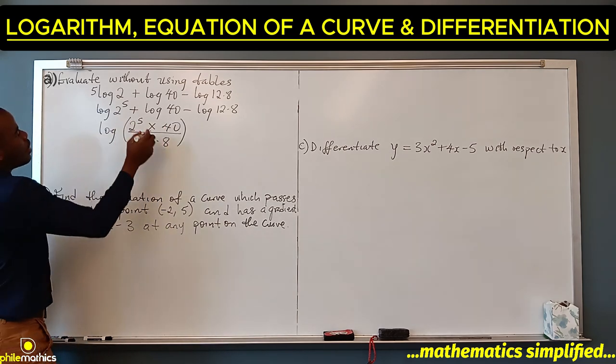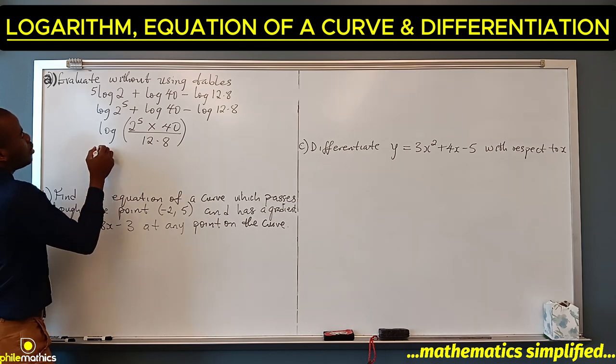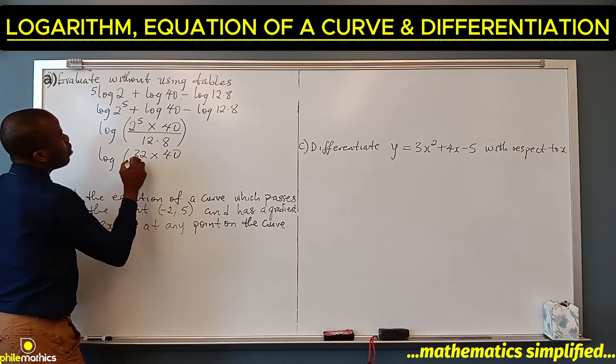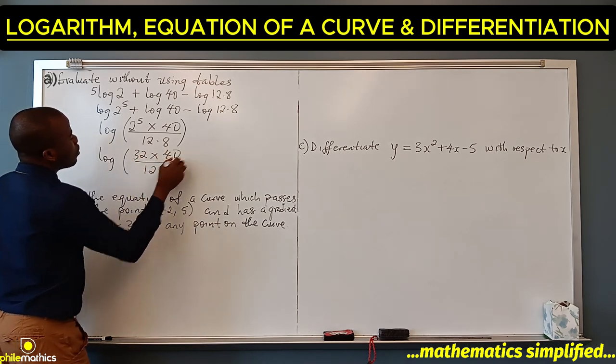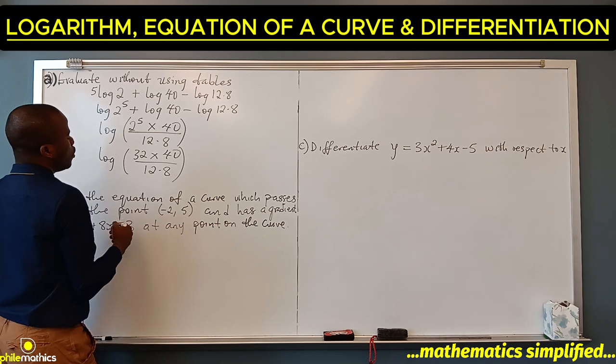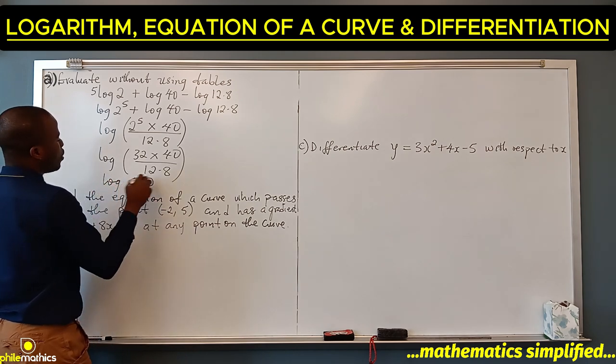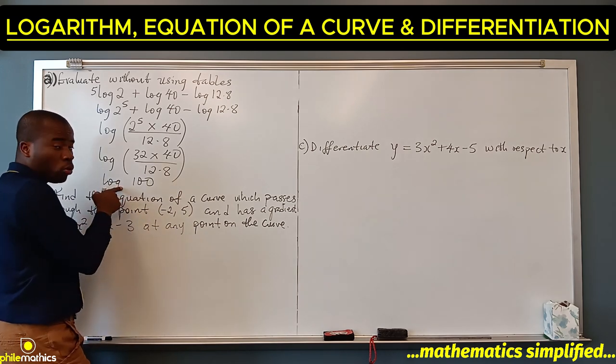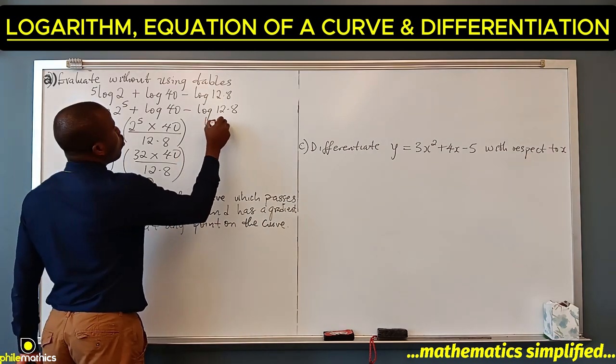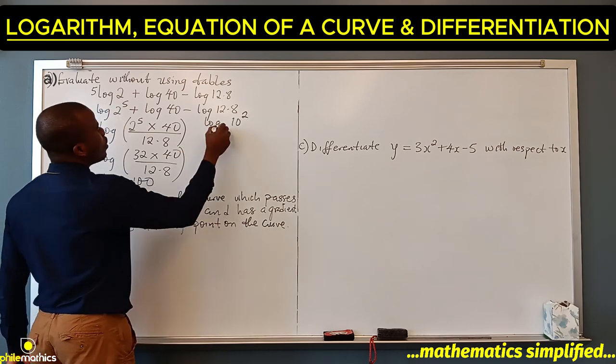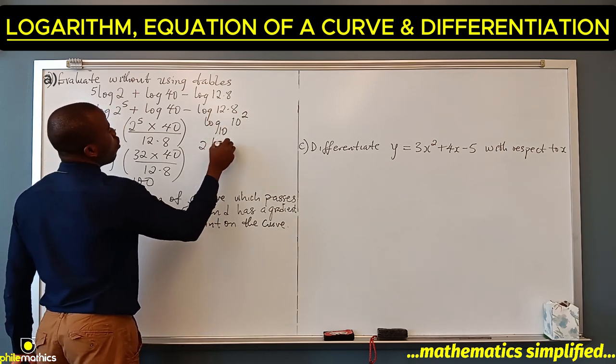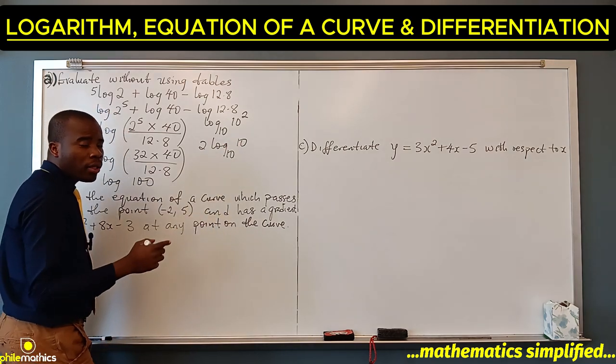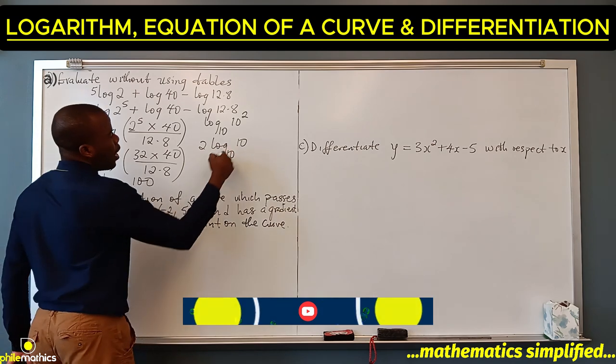If I simplify this, 2 to power 5 is 32, times 40 over 12.8. We have 100, so this is log 100. Since the base is not specified, it's assumed to be base 10. So log 10 to power 2, which is 100, is the same as 2 log 10. Log of a number to the same base is 1, so this is 2 times 1, which is 2.